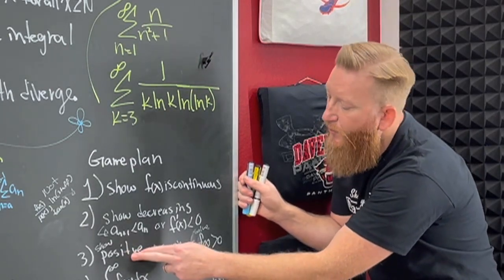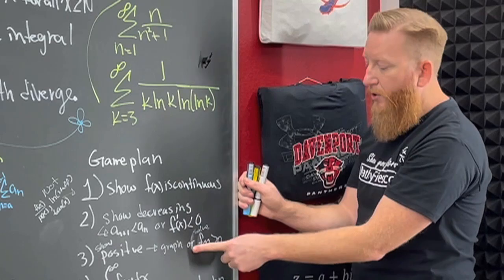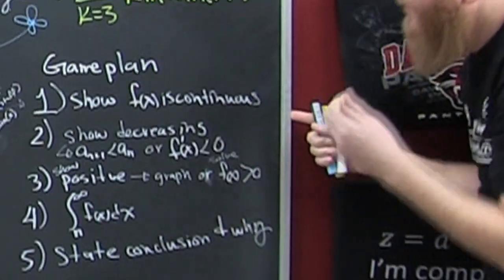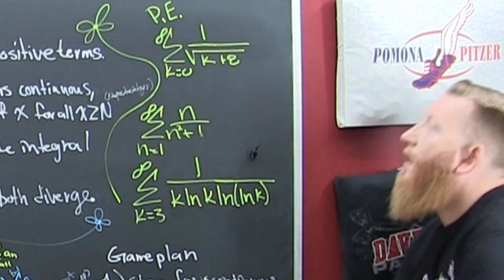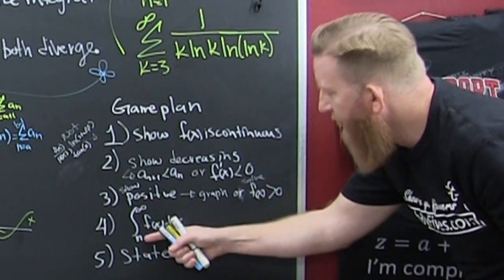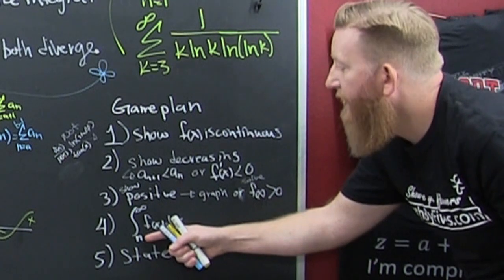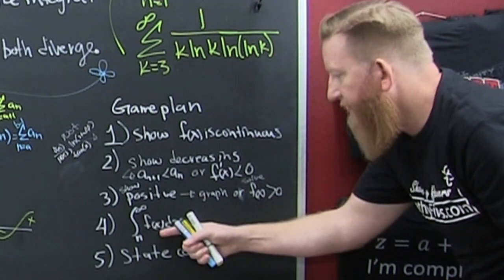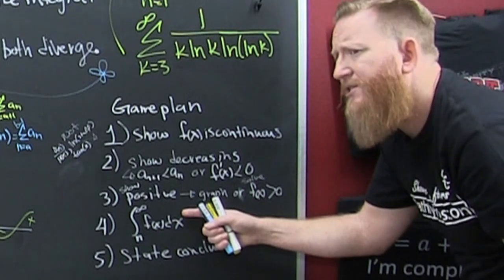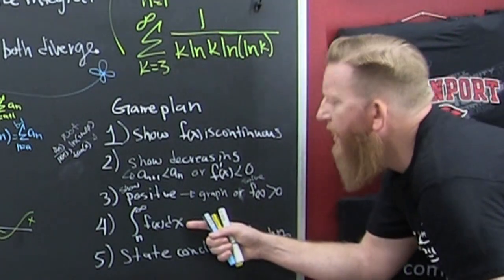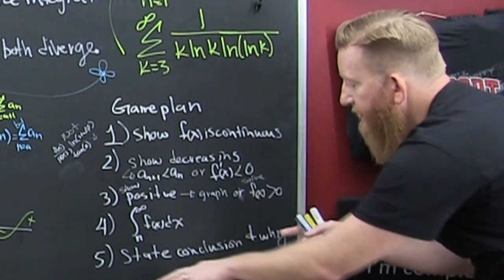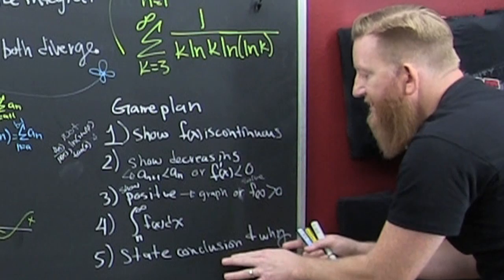Third, show it's positive — graph it or solve the inequality f(x) > 0. Fourth, actually integrate the function from n to infinity (or n+1 to infinity — either is fine) using an improper integral. That's why improper integrals were the section before this. Find out what the integral does — converges or diverges — then state your conclusion and why.